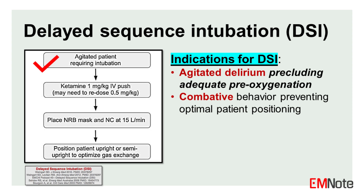Indications. DSI is specifically indicated for patients exhibiting agitated delirium or combative behavior that precludes adequate pre-oxygenation and optimal patient positioning prior to attempted intubation. These patients are at high risk for peri-intubation hypoxemia and physiologic decompensation with standard RSI.